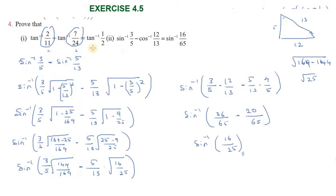Second problem: prove that sin inverse of 3 by 5 minus cos inverse of 12 by 13 equals sin inverse of 16 by 65.